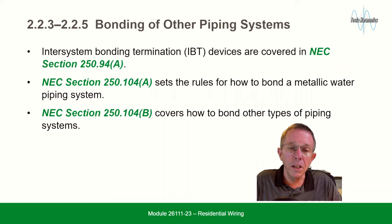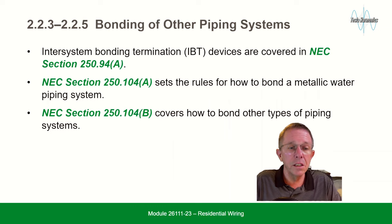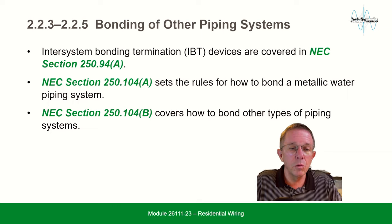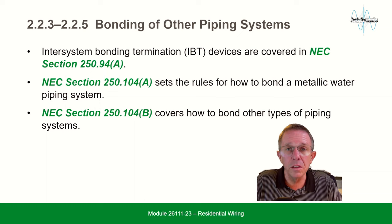Bonding of other piping systems: inter-system bonding terminations, or IBTs, are covered in NEC section 250.94(A). NEC section 250.104(A) sets the rules for how to bond a metallic water piping system, and NEC section 250.104(B) covers how to bond other types of piping systems.